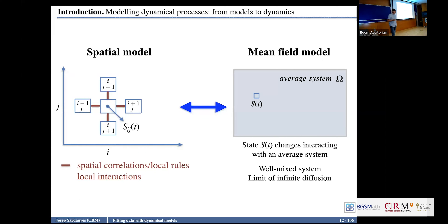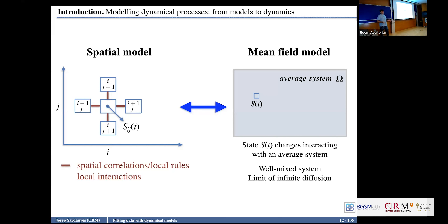Physics has been finding every kind of dynamical process — bifurcations, chaos — in a lot of experiments: convection, fluid dynamics, electronics, optics, lasers. Everything is described in physics. But in biology, this is starting now. We are starting to find things in real biological systems that we know from dynamical systems theory, and I will show you some examples.